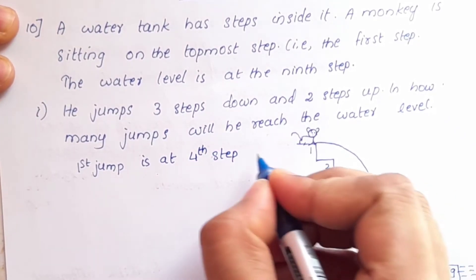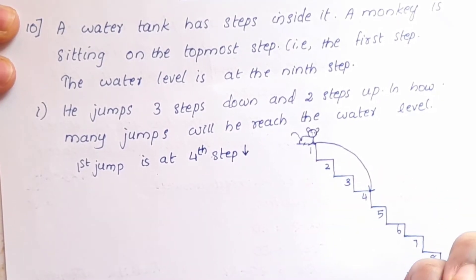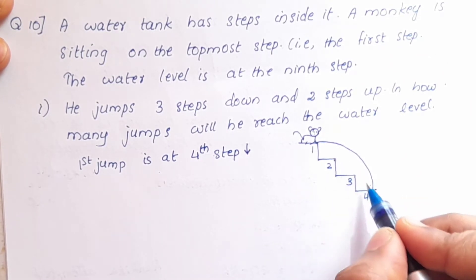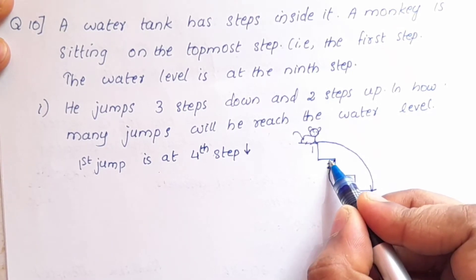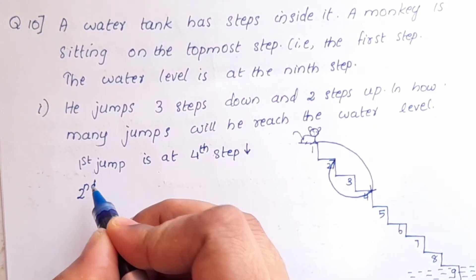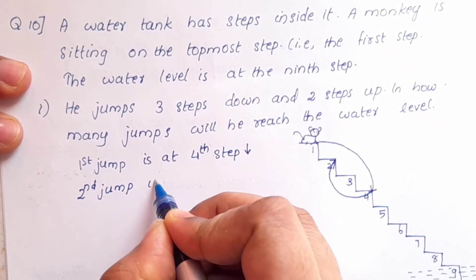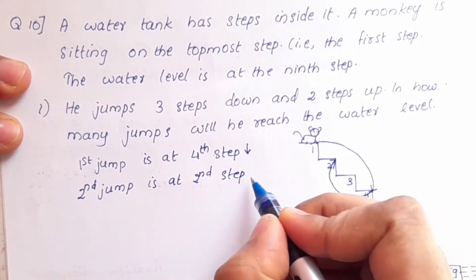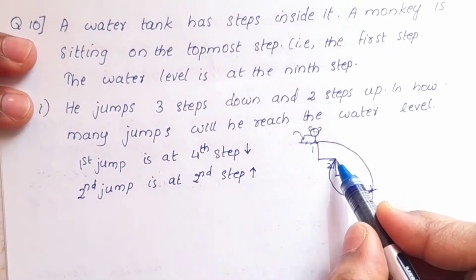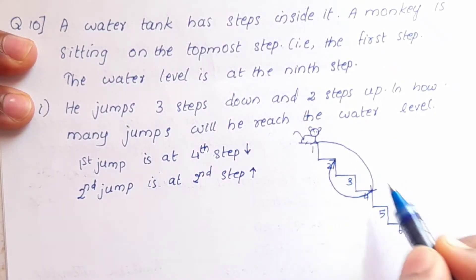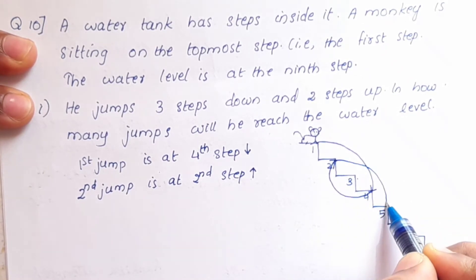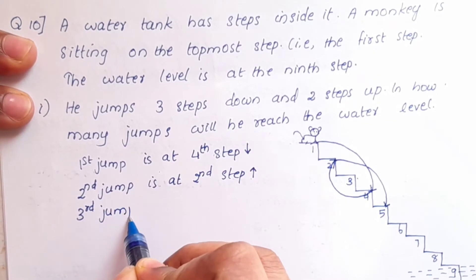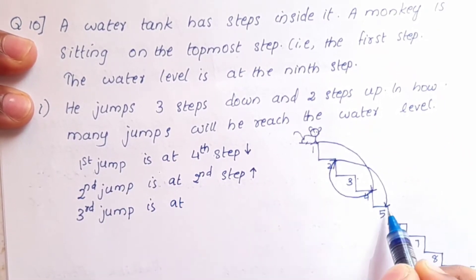First jump is 3 steps down, landing on the 4th step, then 2 steps up, landing on the 2nd step. The second jump then takes the monkey 3 steps down to the 5th step.